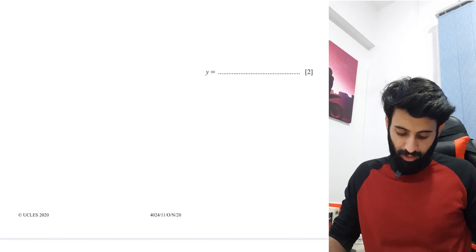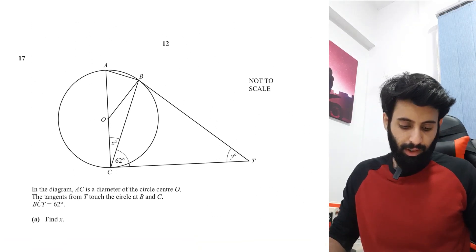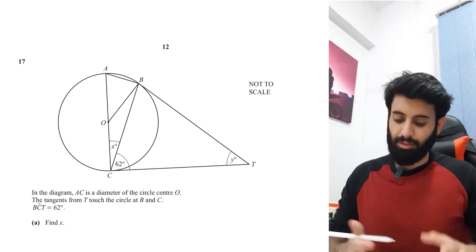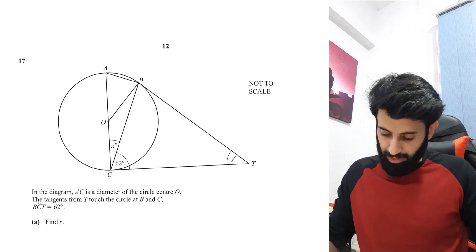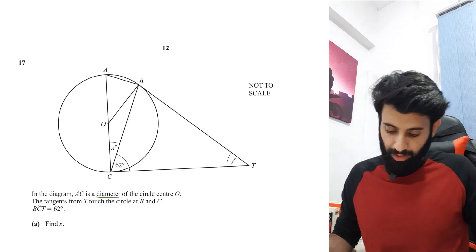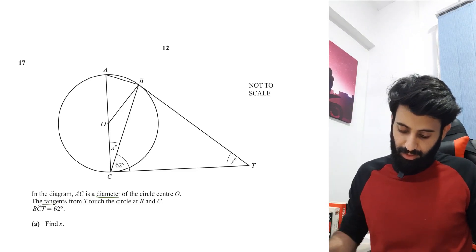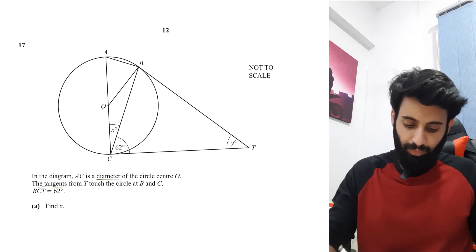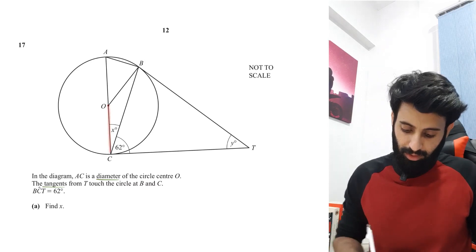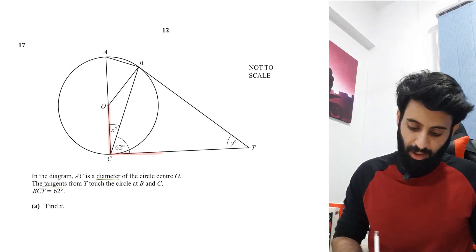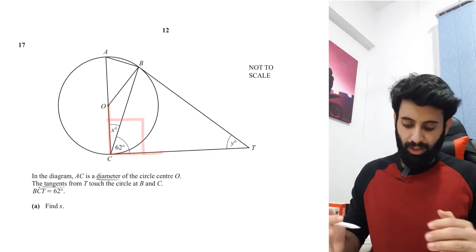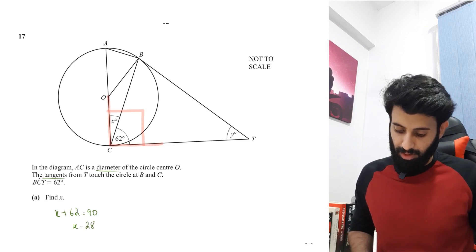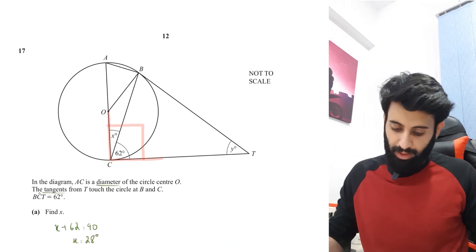Next question, from October November 2020 Paper 1 Variant 1. AC is the diameter of the circle with center O. The tangents from T touch the circle at B and C. Angle BCT equals 62 degrees. Find x. Since the angle between a radius and a tangent is always 90 degrees, x plus 62 equals 90, so x equals 90 minus 62 which is 28 degrees.